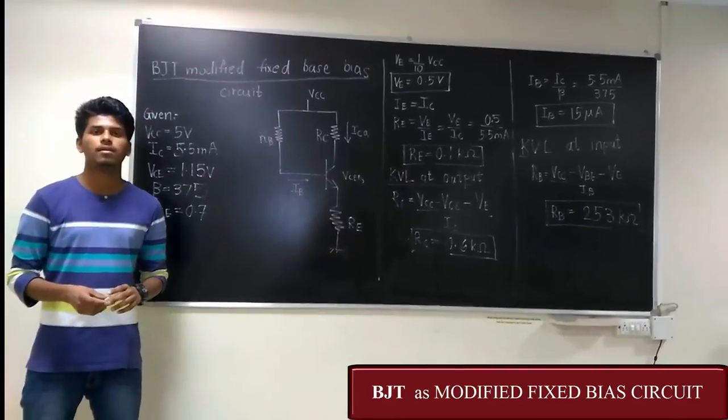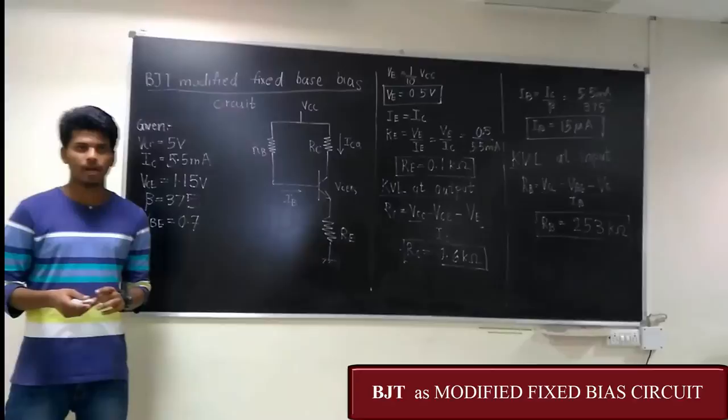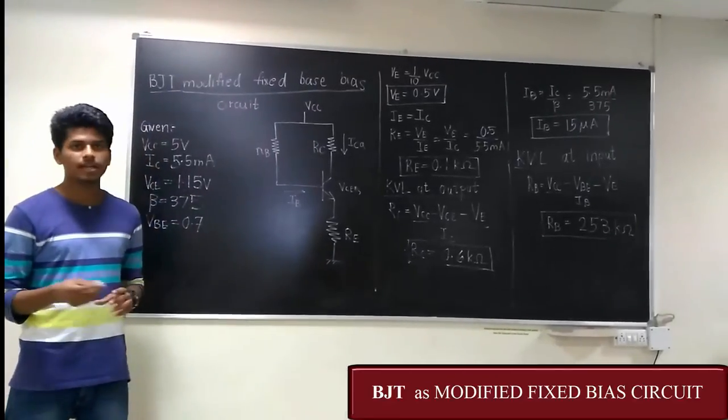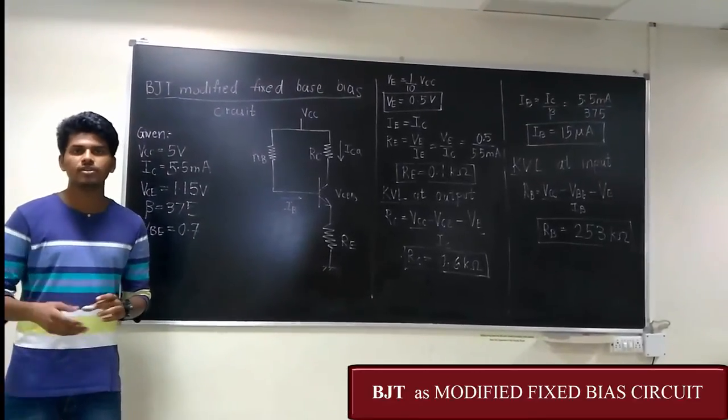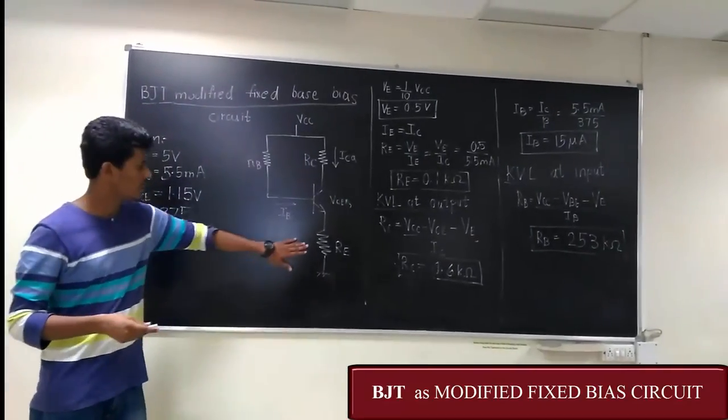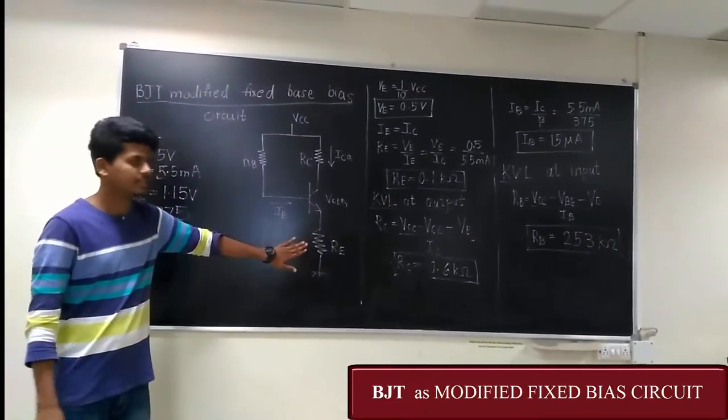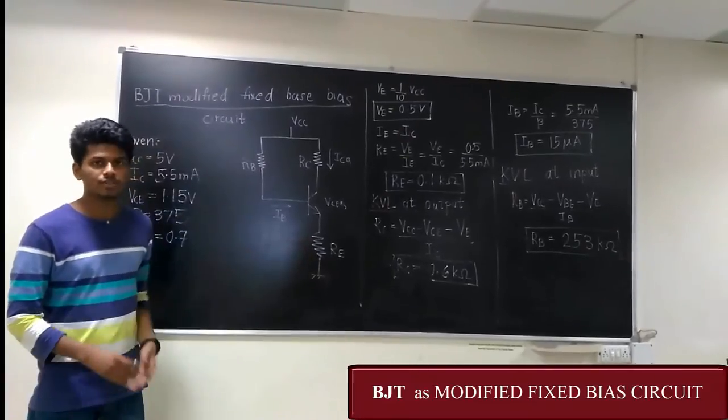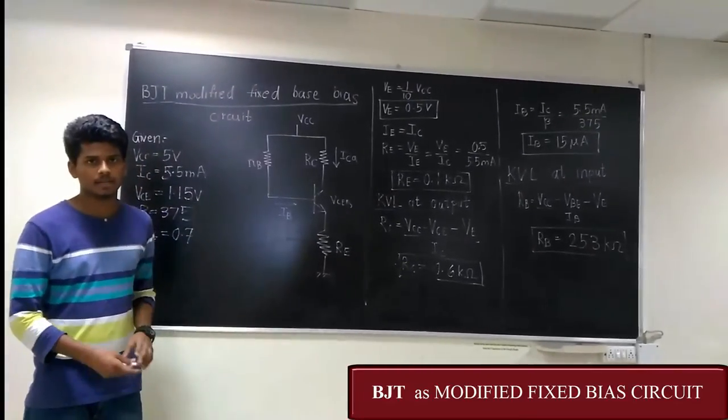Greetings to all. Welcome to Analog Electronics Lab 1. Today, we would be looking into the modified version of fixed bias. In the modified version, an extra resistor is used as the Emitter resistance. Our main motive is to design one modified fixed bias circuit.